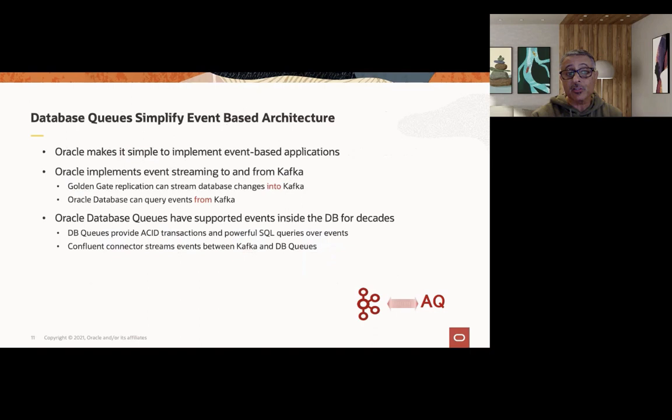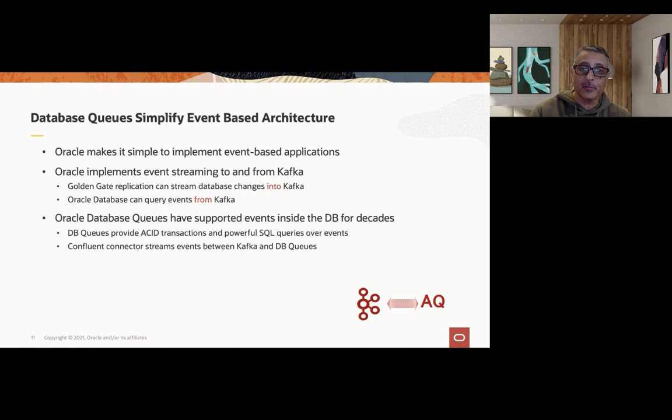In addition to that, we're able to solve the queuing issues — Oracle has an event-driven queuing capability that's available to stream data to and from Kafka. We in fact have a live lab to demonstrate that we can use Golden Gate replication to stream database changes into Kafka to support those very high volume transaction workloads. We also can query events from Kafka effortlessly with the database event-driven model.